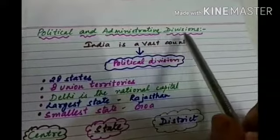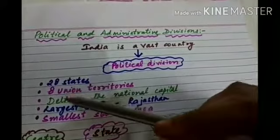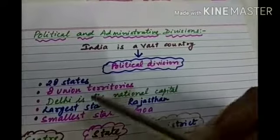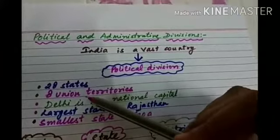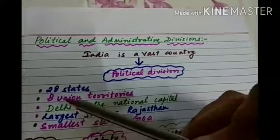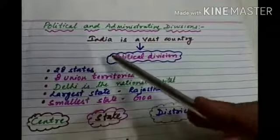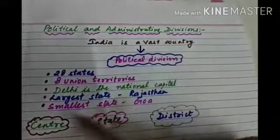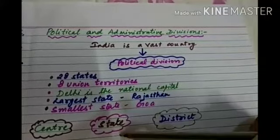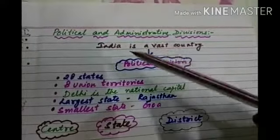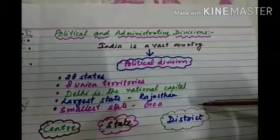Political and administrative divisions: India is a vast country. It has 28 states, 8 union territories, and Delhi is the national capital. The largest state is Rajasthan and the smallest state is Goa. India is further divided into center, state, and district levels. States have chief ministers who control state affairs, while the central government controls the whole country, and district-level officers manage local administration.